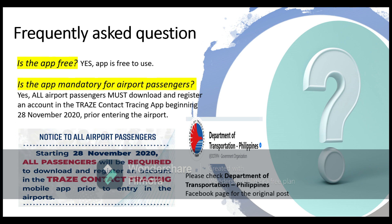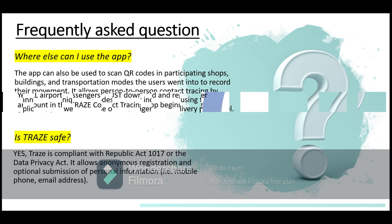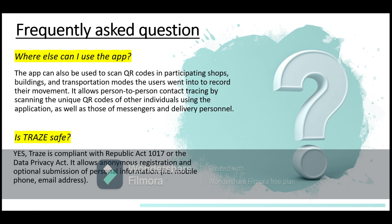The Department of Transportation posted an announcement regarding this on their Facebook page — please check their Facebook page for the original post. The application can also be used to scan QR codes at participating shops, buildings, and transportation modes to record movement. It also allows person-to-person contact tracing by scanning an individual's unique QR code using the app. Trace is safe to use — DOTR assured that Trace is compliant with Republic Act 10173, also known as the Data Privacy Act. It also allows anonymous registration and optional submission of personal information such as phone number and email address.